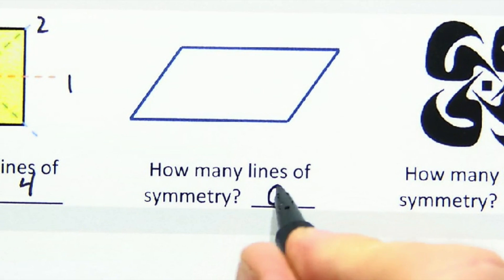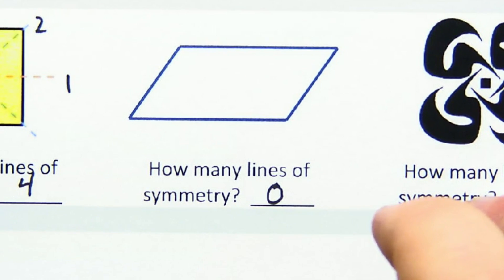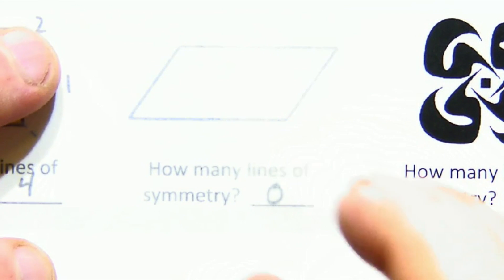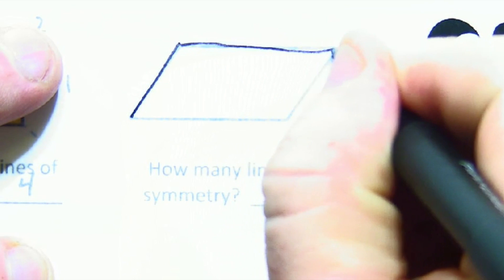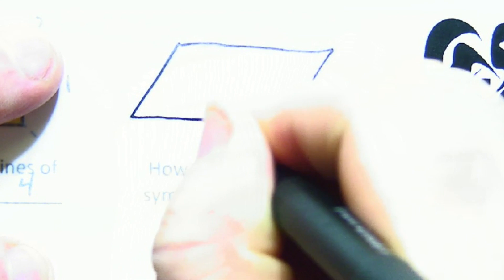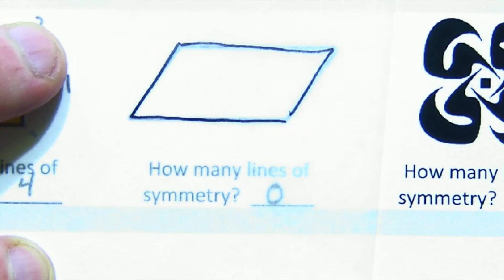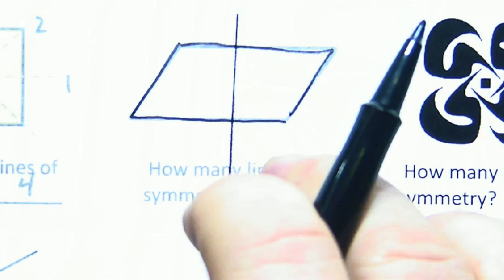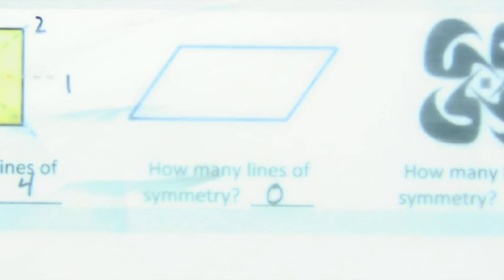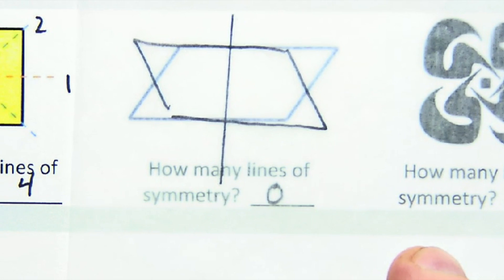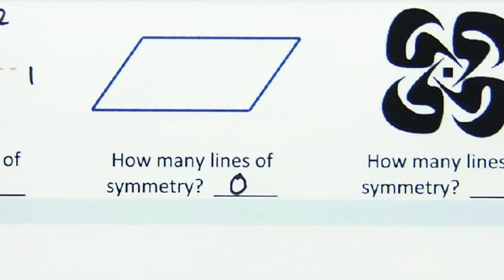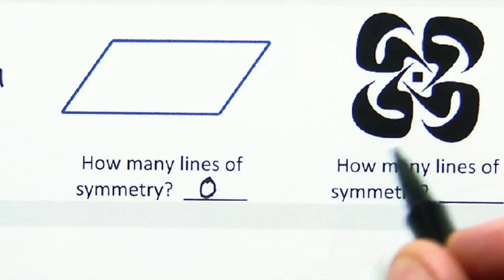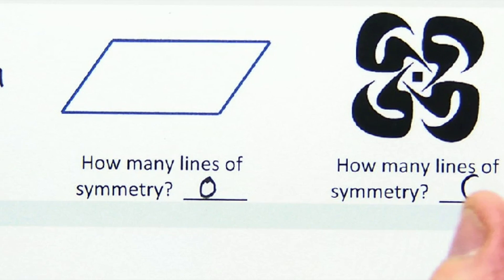The parallelogram has no lines of symmetry. Again, we could kind of test it out and try and map it onto itself. But I think we would find, well, you know what we're going to find. If we performed a reflection, say, down a vertical, you know what's going to happen when we flip it over. We're not going to map onto itself. And then this has rotational symmetry, but not line symmetry.